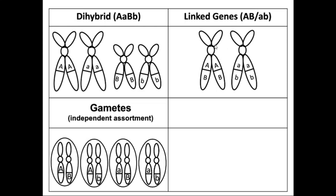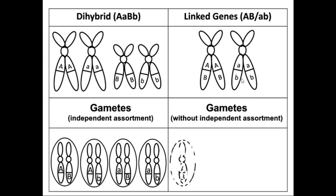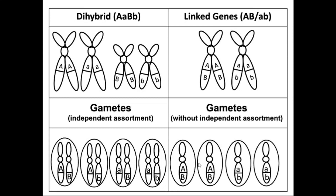For linked genes, because they are linked together and do not undergo independent assortment, instead of four gamete types, only two types are produced: AB and ab. This demonstrates the result of genes that do not undergo independent assortment.